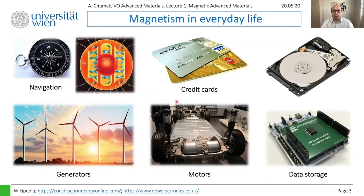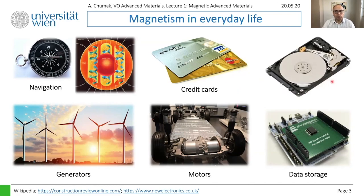Another example of magnetism is credit cards: on each card there is a magnetic stripe containing important information about our finances. Of course there is also magnetic recording and hard disk drives. While SSDs and flash memory have nothing to do with magnetism, cloud storage — which we use more and more — relies on hard disks, so hard disks are still very important in everyday life.